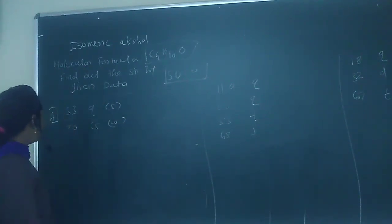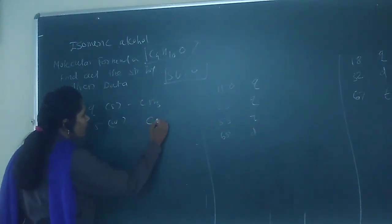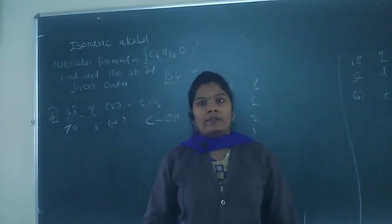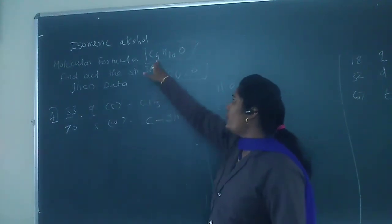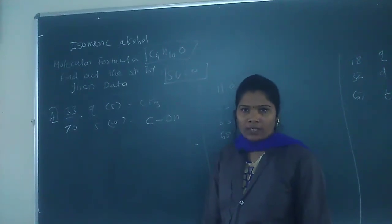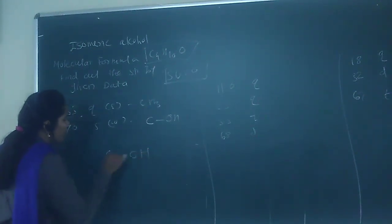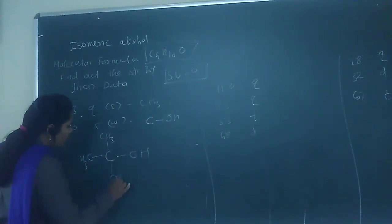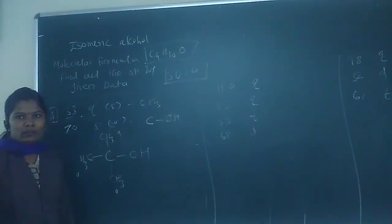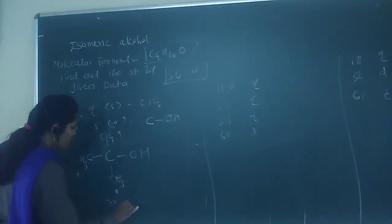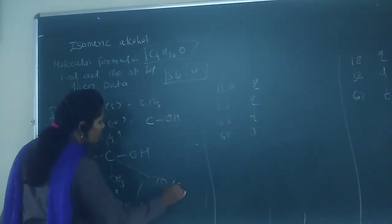For the first isomeric alcohol, the data shows 33 (quartet) and 70 (singlet). The quartet at 33 is a CH3 group. The singlet at 70 — since C-OH values fall in the range 50–80 ppm — indicates a quaternary carbon attached to OH. With 4 carbons total but only 2 signals, the remaining CH3 groups must all be equivalent (AA-type), all showing the same value of 33 quartet.